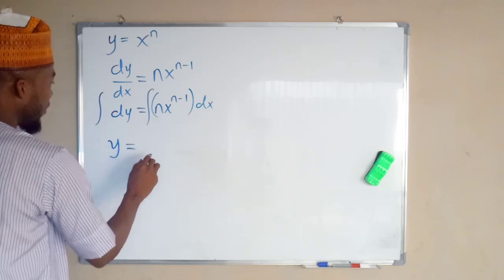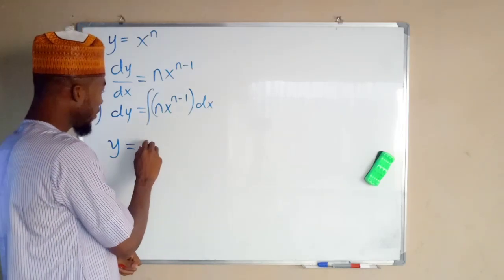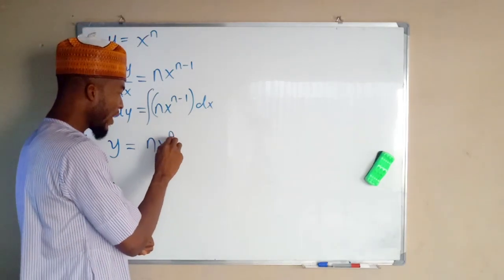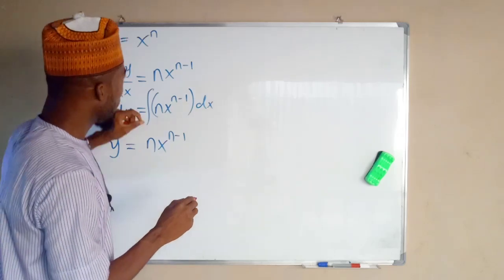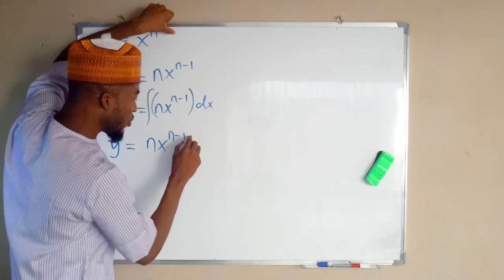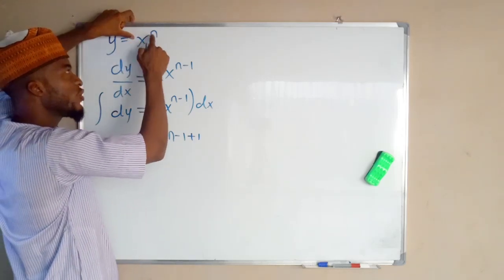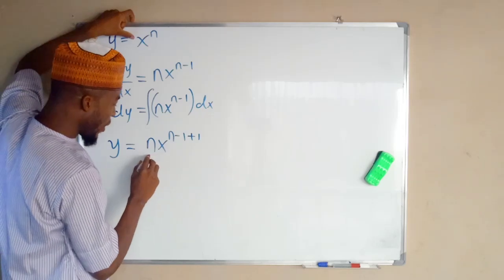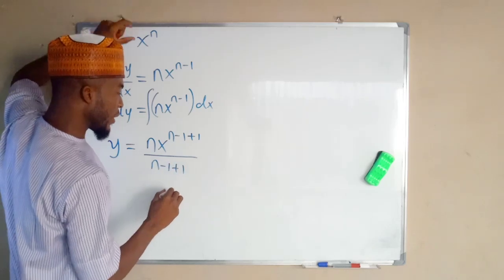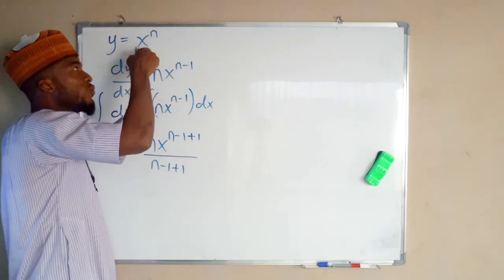By integrating the left hand side we are going to obtain y. On the right hand side, whatever we do here we are going to do the opposite. So this equals n times x to the power of n minus one — this is the function we are going to integrate. Remember, in differentiation we subtract one, but here we are going to add one — the opposite. In differentiation we multiply the function by the index, but this time around we are going to divide by the index, and now the index is n minus one plus one.